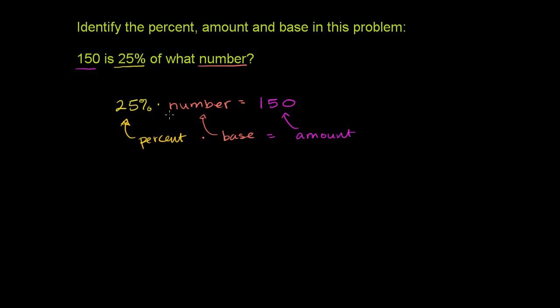And you could try to solve this in your head. This is essentially saying 25% of some number, 25% times some number, is equal to 150. If it helps, we can rewrite this as 0.25, which is the same thing as 25%. 0.25 times some number is equal to 150.